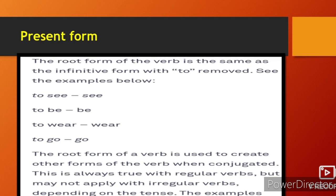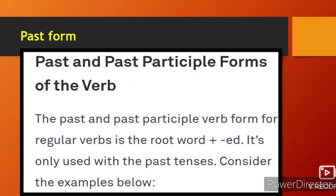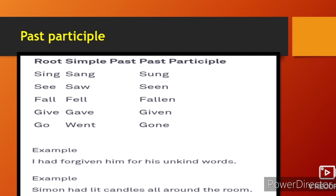This is always true with regular verbs but may not apply with irregular verbs depending upon the tense. Jo root verb hai uska use karte hain aur usmein se jab hum 'to' nikalte hain, toh usse doosre verb forms banate hain — jaise past form ya past participle. Past and past participle forms for regular verbs: sirf 'ed' lagate hain — it's only used with past tenses.